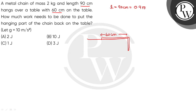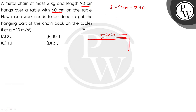We have 60 cm on the table. The hanging part — let's call it L — will be 90 minus 60 cm, which is 30 cm, or 0.3 m. This part is hanging below the table.